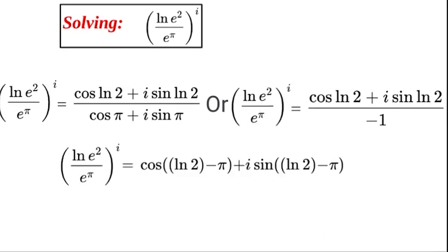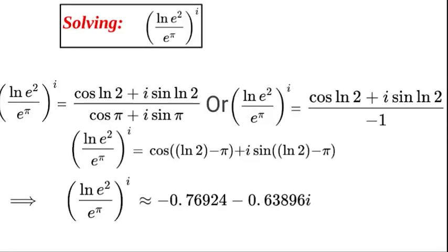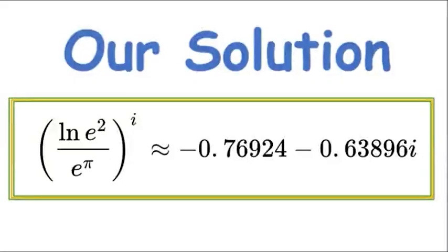Okay, so there's our final solution format and we can now get our calculator and establish an approximate value. Set your calculator to radians and type in cos of ln 2 minus π. We will get this rounded to five decimal places: minus 0.76924. And for the i value: minus 0.63896i.